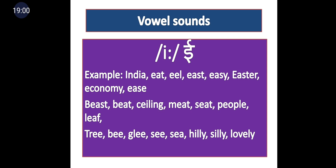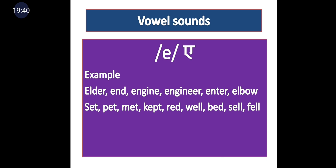The second pure vowel is long E (iː). Examples initially: India, eat, east, easy, Easter, economy, ease. Medially: beast, beat, ceiling, meet, seat, people, leaf. Finally: tree, bee, glee, see, healy, seely, lovely. Remember the symbol for long E — I have given it in Devanagari script as well. The next vowel symbol looks like E but in slant bars its pronunciation is 'e' — do not call it E. Examples: elder, end, engine, engineer, enter, elbow.